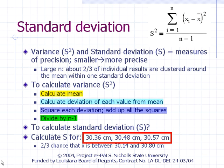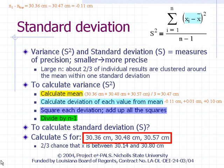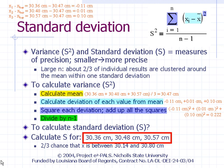Using the cup depth data, the mean is 30.47 centimeters. The deviations are: 30.36 − 30.47 = −0.11 cm; the others are +0.01 and +0.10 centimeters. We square each deviation, add them up, and divide by n − 1. This gives a variance of 0.0111 centimeters squared. The standard deviation is the square root of the variance — in this case, 0.0333 centimeters.